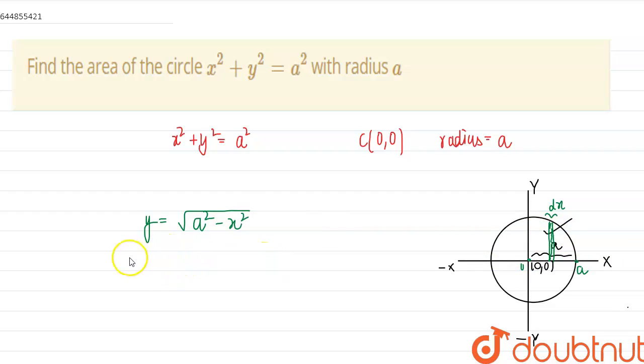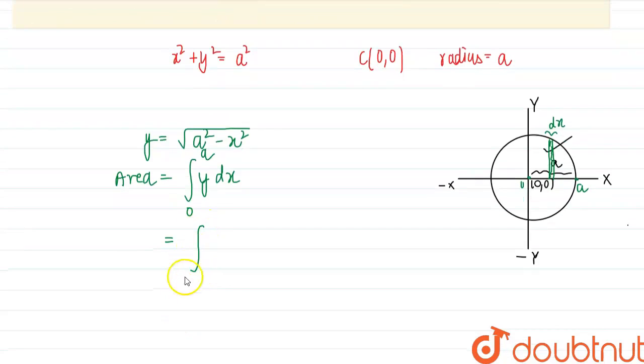So the area will be equal to ∫y dx, and the limits will be from 0 to a. So this will be ∫₀ᵃ √(a² - x²) dx.